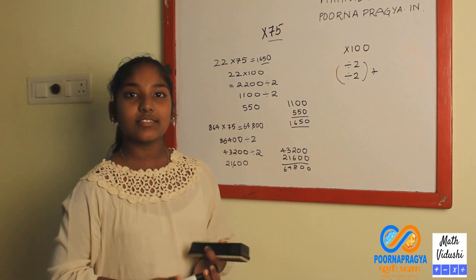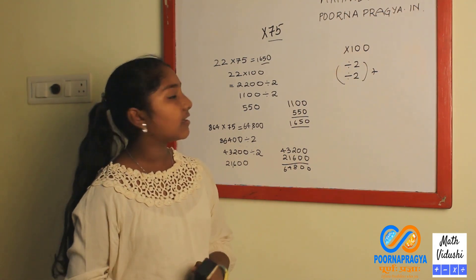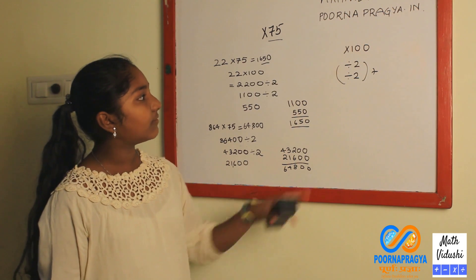And that's it for multiplication by 75. Any number to multiply with 75, this is the trick.